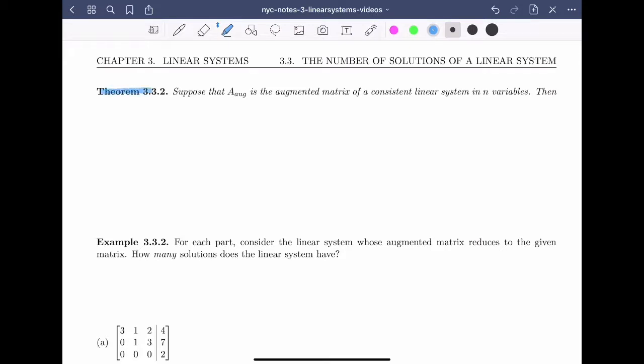We'll do that in Theorem 3.2. Suppose that A|b is the augmented matrix of a consistent linear system in n variables. Then, the number of free variables is equal to n, the number of variables, minus the rank of the augmented matrix.